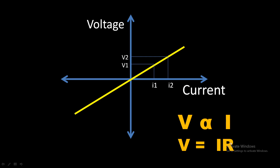To calculate resistance, I can divide the value of V by the current. V divided by I is R. So with the help of this graph, I can easily find the value of resistance. If I have V1 and I1, or V2 and I2 values, then R would be V1 divided by I1, or V2 divided by I2. In both cases, the same value of resistance R will be obtained because it is in direct proportion. That's why it is a straight line.